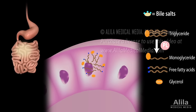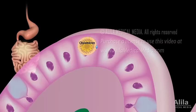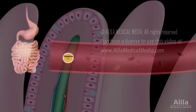Triglycerides are packaged, along with cholesterol, into large lipoprotein particles called chylomicrons. Lipoproteins enable transport of water-insoluble fats within aqueous environments. Chylomicrons leave the enterocytes, enter lymphatic capillaries, and eventually pass into the bloodstream, delivering fats to tissues.